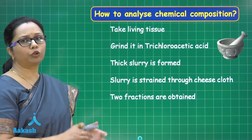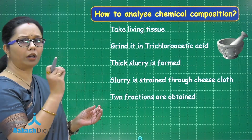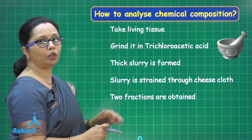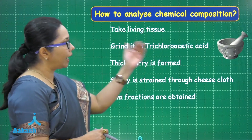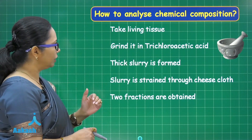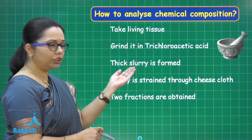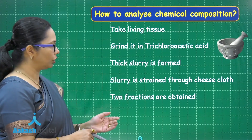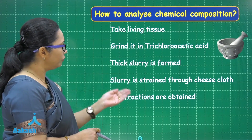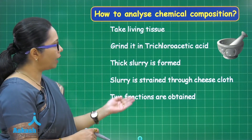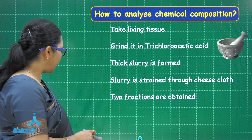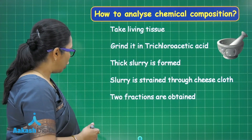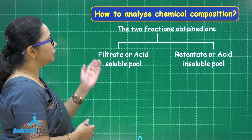That living tissue could be a piece of liver or a leaf from a plant. We then grind it in trichloroacetic acid using a mortar and pestle. We get a thick paste called slurry, and then we strain it through cheesecloth. This gives us two fractions — one which gets filtered and the other which remains as residue.